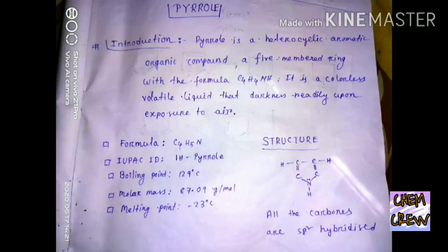Hello guys, today I'm going to tell you about pyrrole. So what is pyrrole? First, an introduction. Pyrrole is a heterocyclic aromatic organic compound, a five-membered ring with the formula C4H4NH.